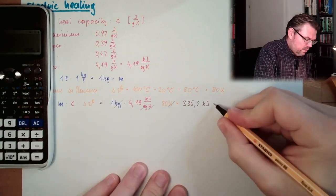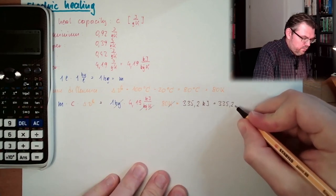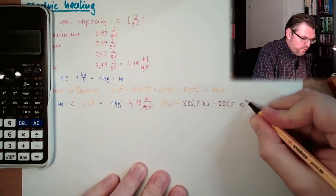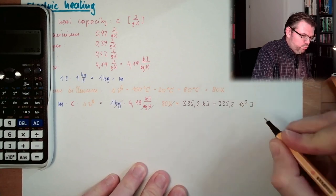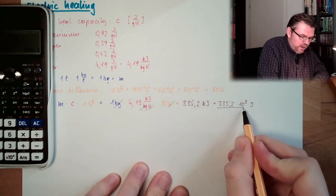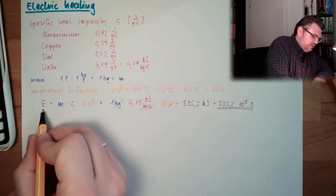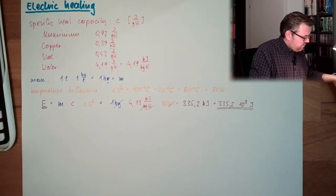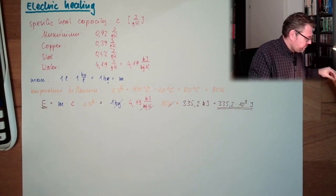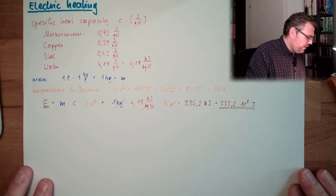So, we're having 335.2 kilojoule. These are 335.2 times 10 to the power of 3 Joules. This is the amount of energy I need. I put into the water to rise to 100 degree Celsius.